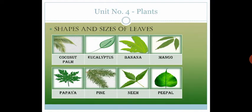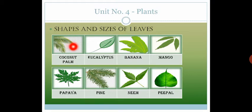First we will discuss the different shapes and sizes of leaves. You have to open page number 31 of your book and read the topic 'Leaves.' Leaves grow on plants, and plants store their food in leaves, stems, and roots.